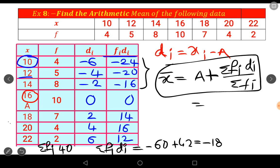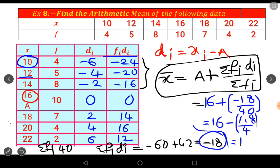A value is equal to 16 plus in the bracket sigma f_i d_i value from the table is minus 18, divided by 40. So 16 plus, in the bracket, minus 18 by 4 first. 1.8 by 4. 16 minus 0.45 equals 0.45. Therefore the answer is 15.55. This is the deviation method.